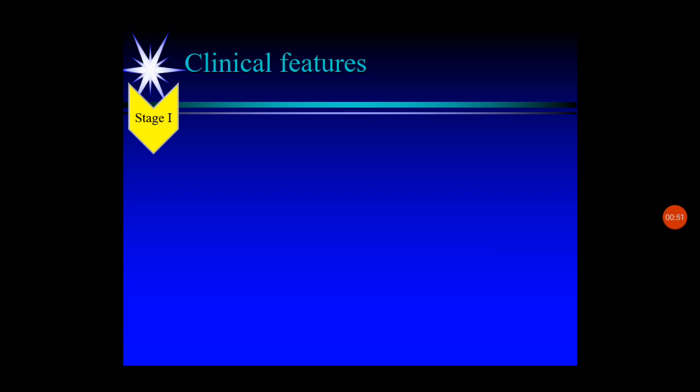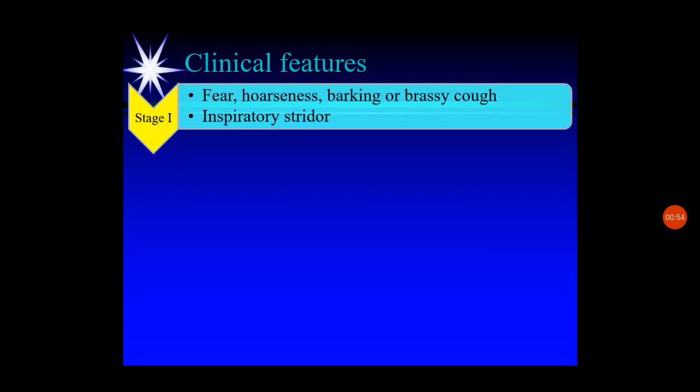The condition varies according to the progress of obstruction. In stage one, with minimum distress, there will be fear, air hunger, hoarseness, a barking or resonant dry and irritating cough, and some amount of inspiratory stridor.